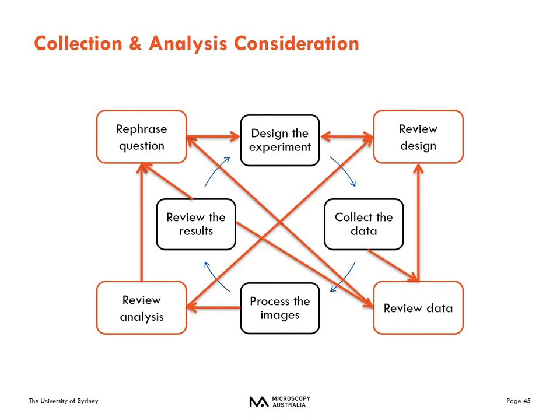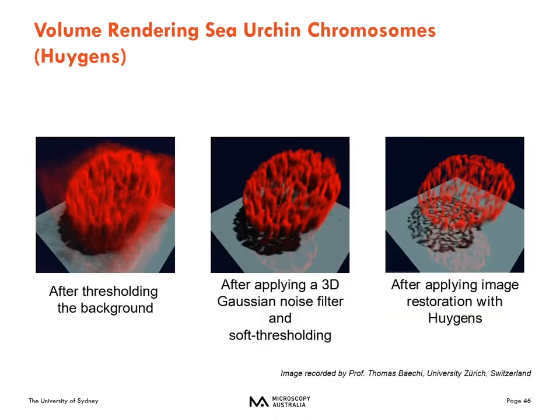Now let's finish off with a few real world examples. This is an image showing the chromosomes from a sea urchin. The first image on the left shows a typical confocal image which has some blurring even after the background has been removed. We normally correct this by filtering the sample so only the brightest parts remain, as shown in the middle image. However, the best way to actually perform this 3D rendering is to deconvolve it — a technique which takes out-of-focus light and puts it back where it should be.